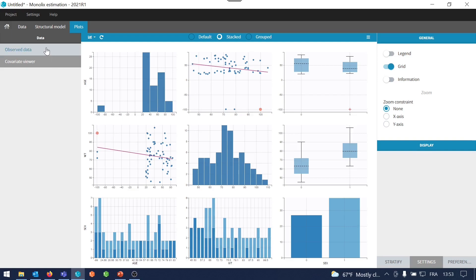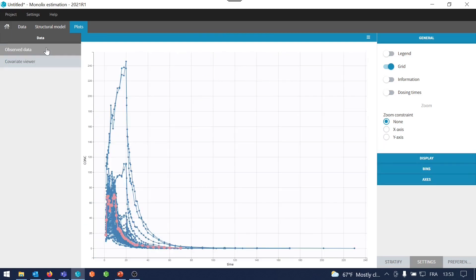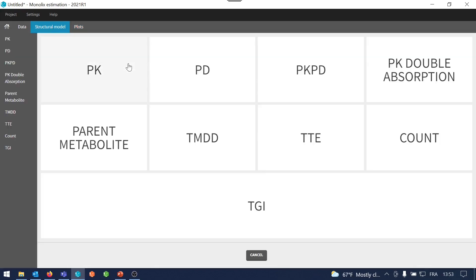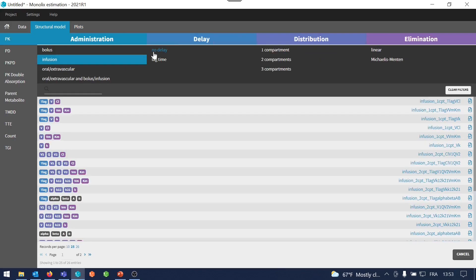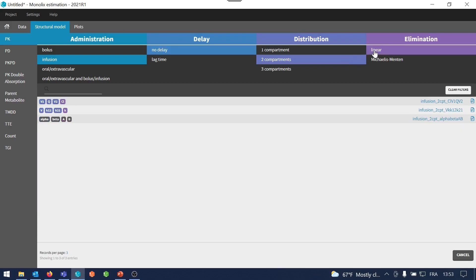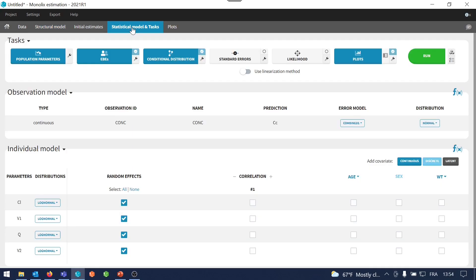I can select one of these ids, look at the data for the corresponding individual, and now I'm going to select a two-compartment model to model this data. I want to check what is the covariate effect of age on my parameters. Covariate effects can be added in the statistical model tab, down here.